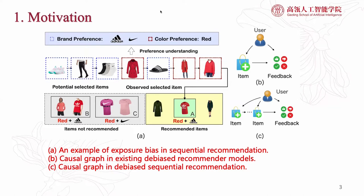The examples show that the observed item correlations are skewed for revealing the real user sequential preference. If the model is directly trained on the observational data, it can be biased from the true user preference. For existing debiased recommendation models, the feedback is jointly influenced by the user and whether the target item is selected. In such formulation, different items are assumed to be independent. However, in sequential recommendation, capturing item correlations is a basic belief for improved recommendation performance, and the item correlations should be highlighted in the causal graph, just like figure C. To the best of our knowledge, there still lacks a thorough understanding of sequential recommendation from a causal inference perspective.